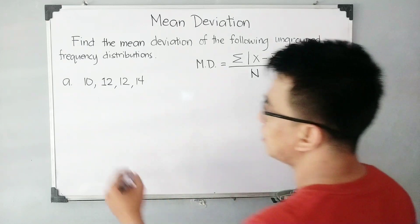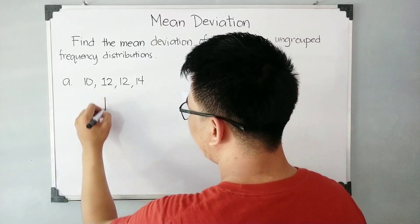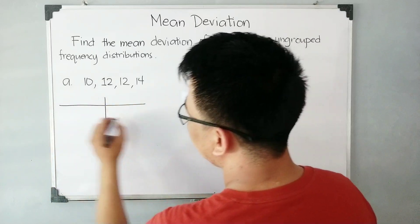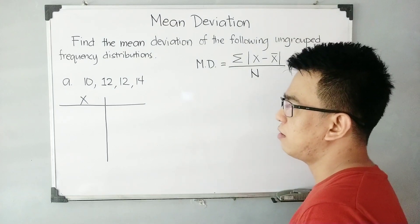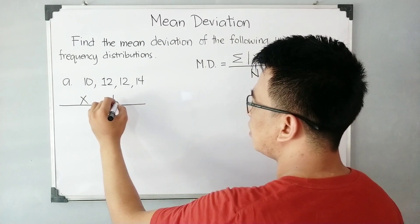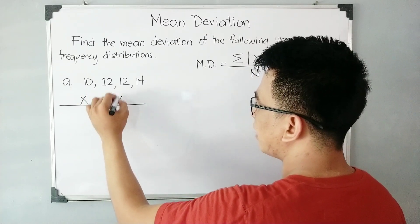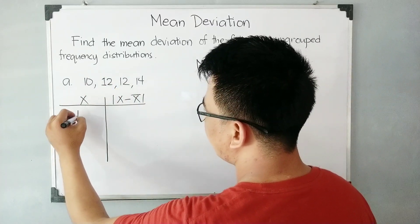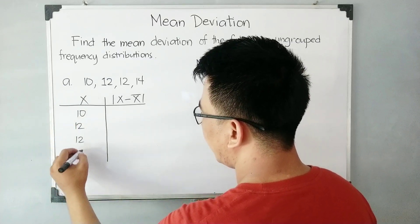Now, the first thing you need to do is to create a two-column table. The first column is for the x variables, or the scores. And for the second column, this column is for the absolute value of x minus x-bar. Now copy your given data set — we have 10, 12, 12, and 14.